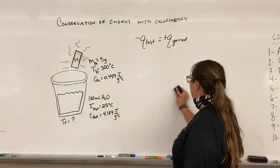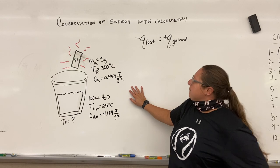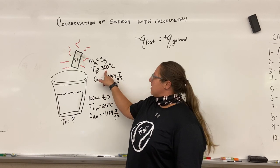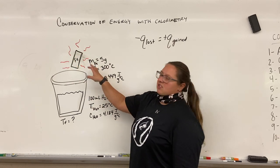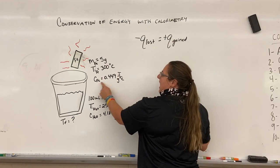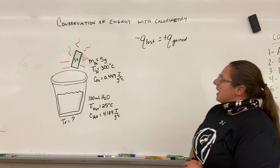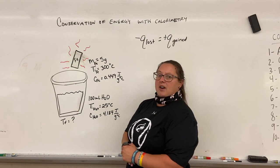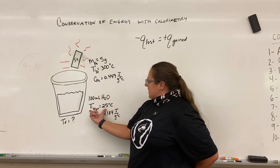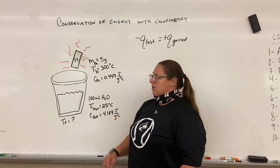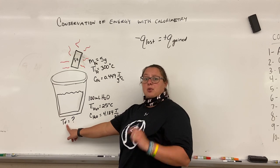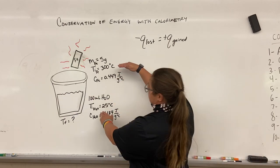Now let's look at our example problem. We have a bar of iron that is about 300 degrees Celsius. The mass of the iron is 5 grams, the initial temperature is 300 degrees Celsius, and the specific heat of iron is given. We're going to drop it into a container of water — coffee cup calorimetry — with 100 milliliters of water at an initial temperature of 25 degrees Celsius. The question is: what is the final temperature, the thermal equilibrium, when we put these two things together?